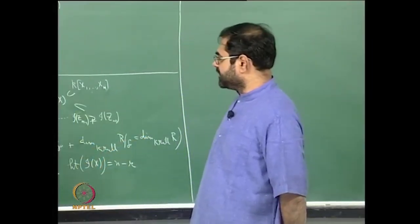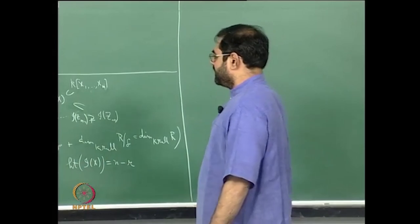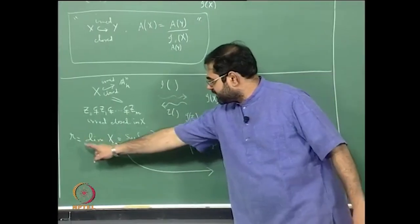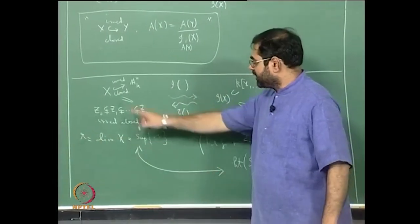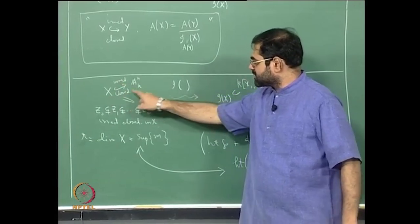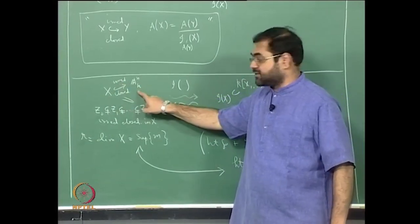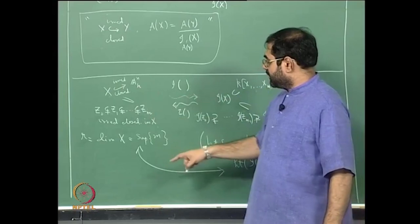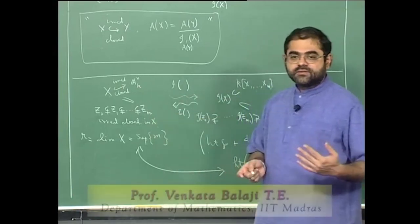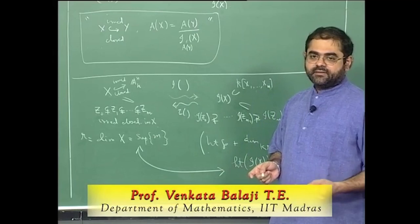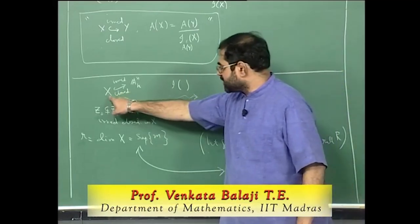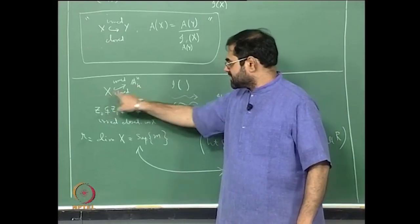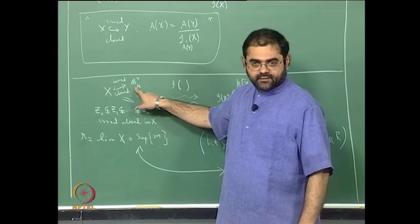Let me continue with this discussion that I ended with last time. What I wanted to say is that when you take the dimension of X to be R, you are taking X to be an irreducible closed subvariety of Aⁿ — an affine variety in Aⁿ. It is common to use the word subvariety when you look at a variety inside another variety. Since X is an irreducible closed subset it is a variety, and Aⁿ is already a variety, so we say that X is a closed subvariety of Aⁿ.